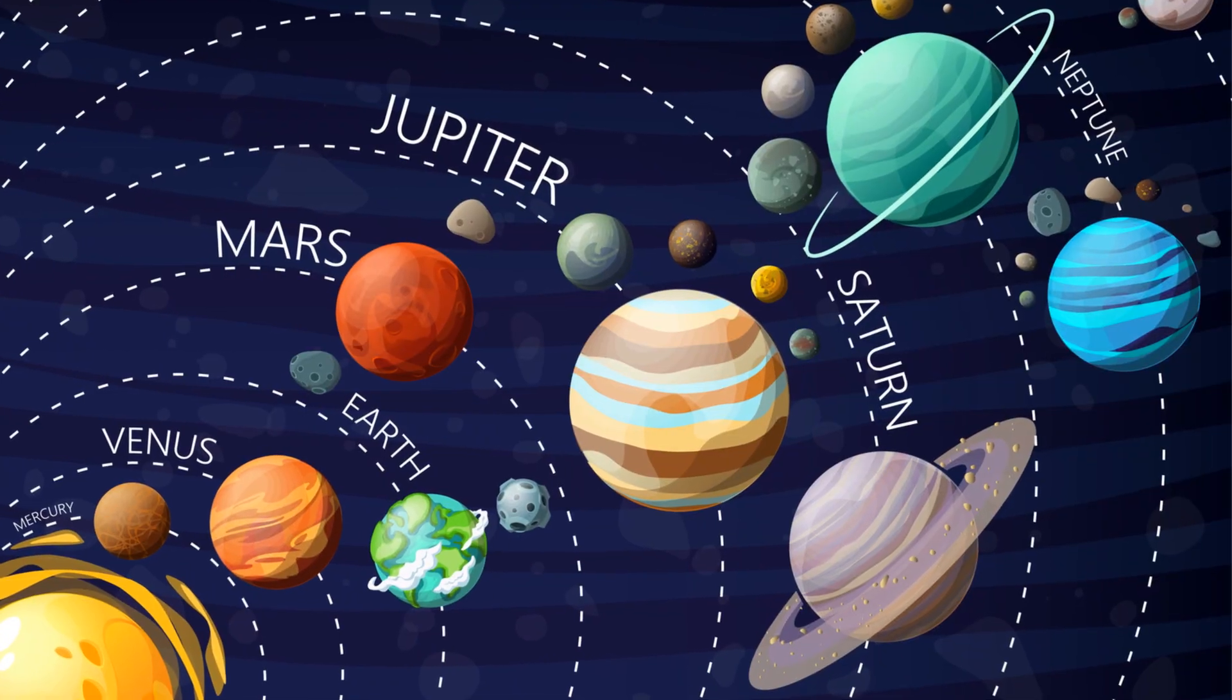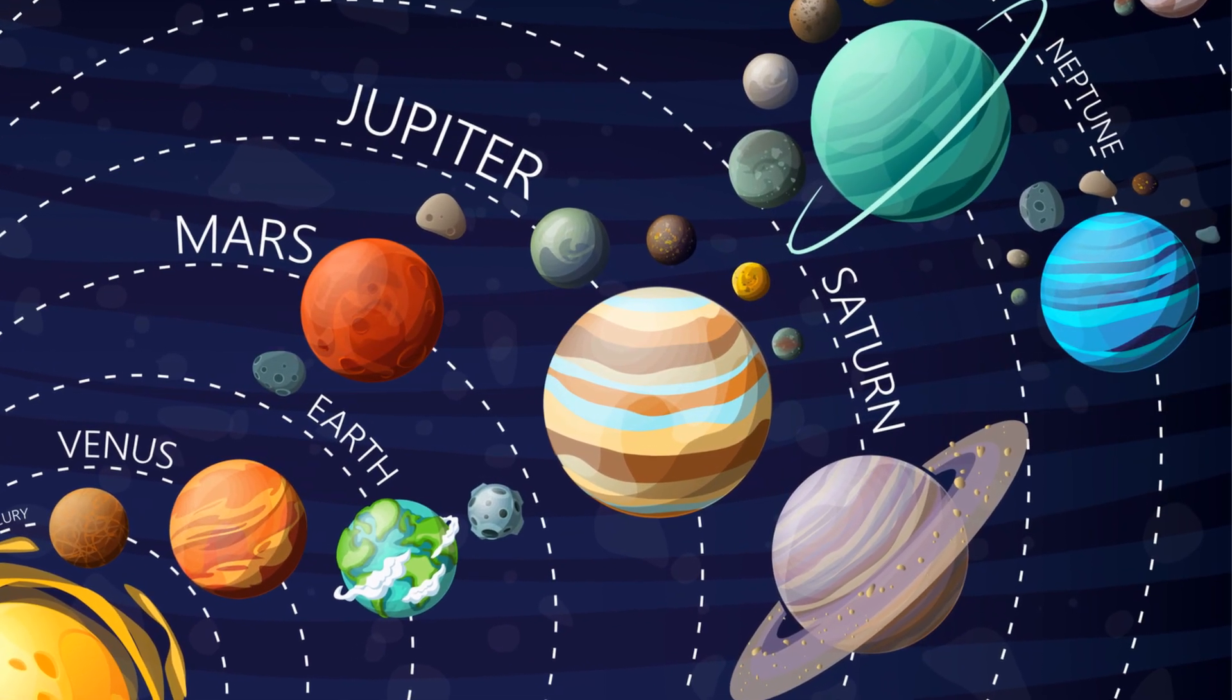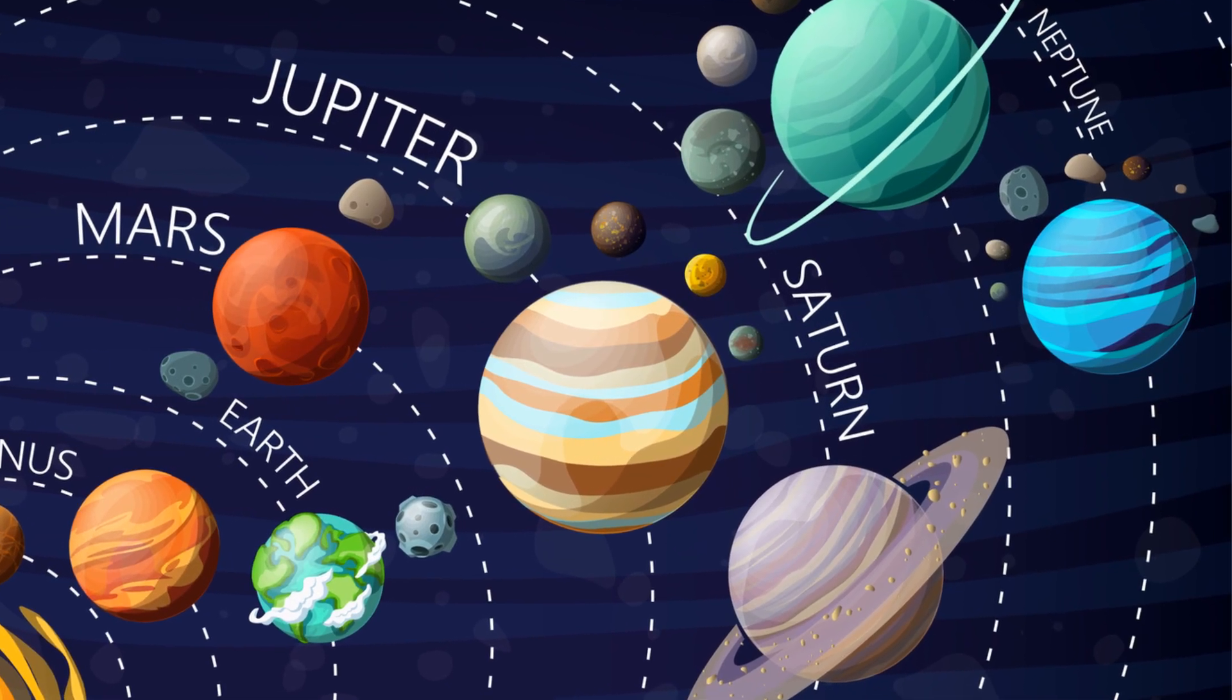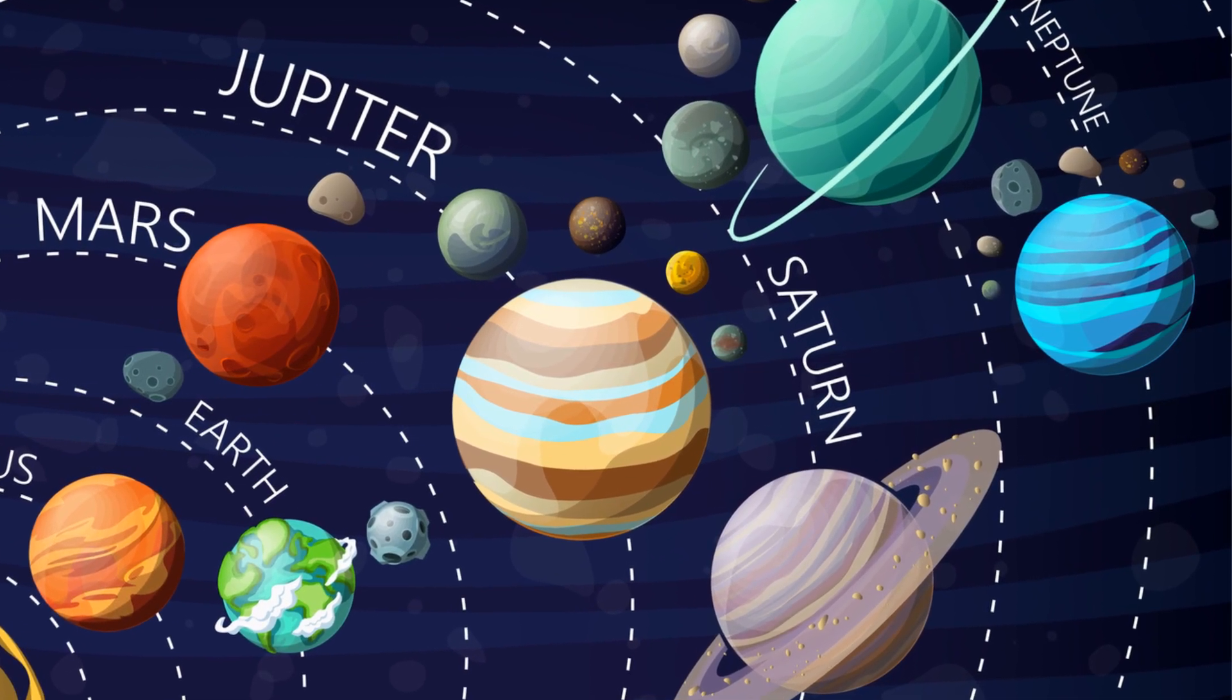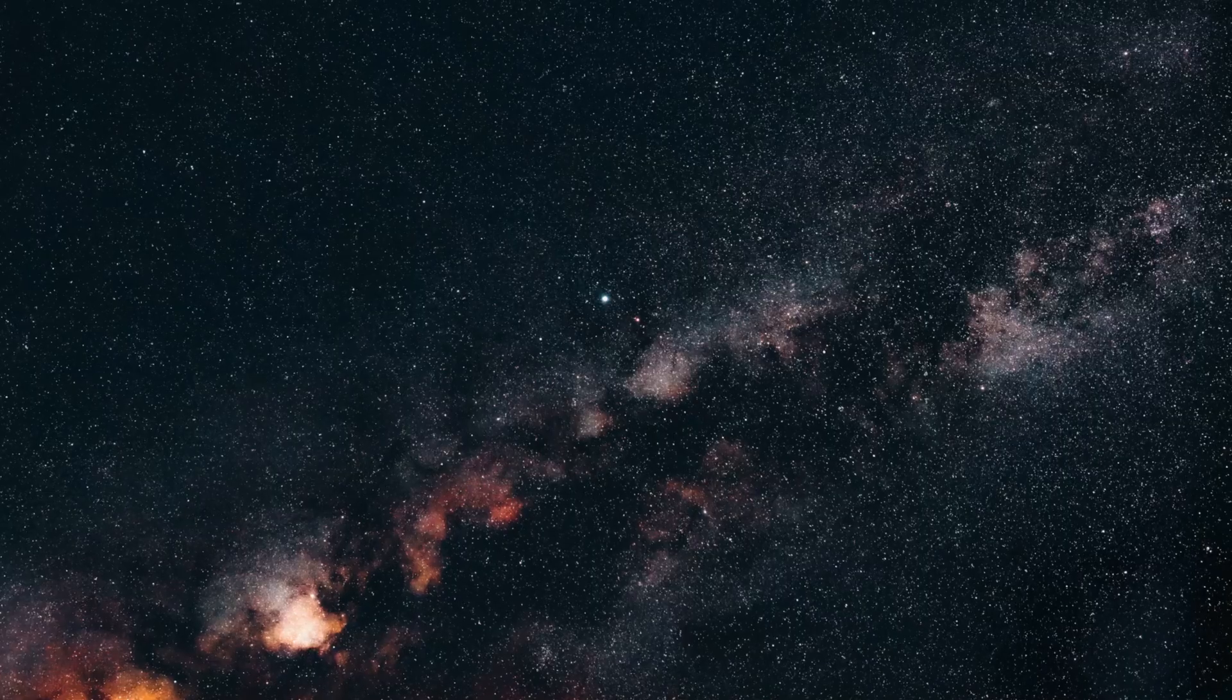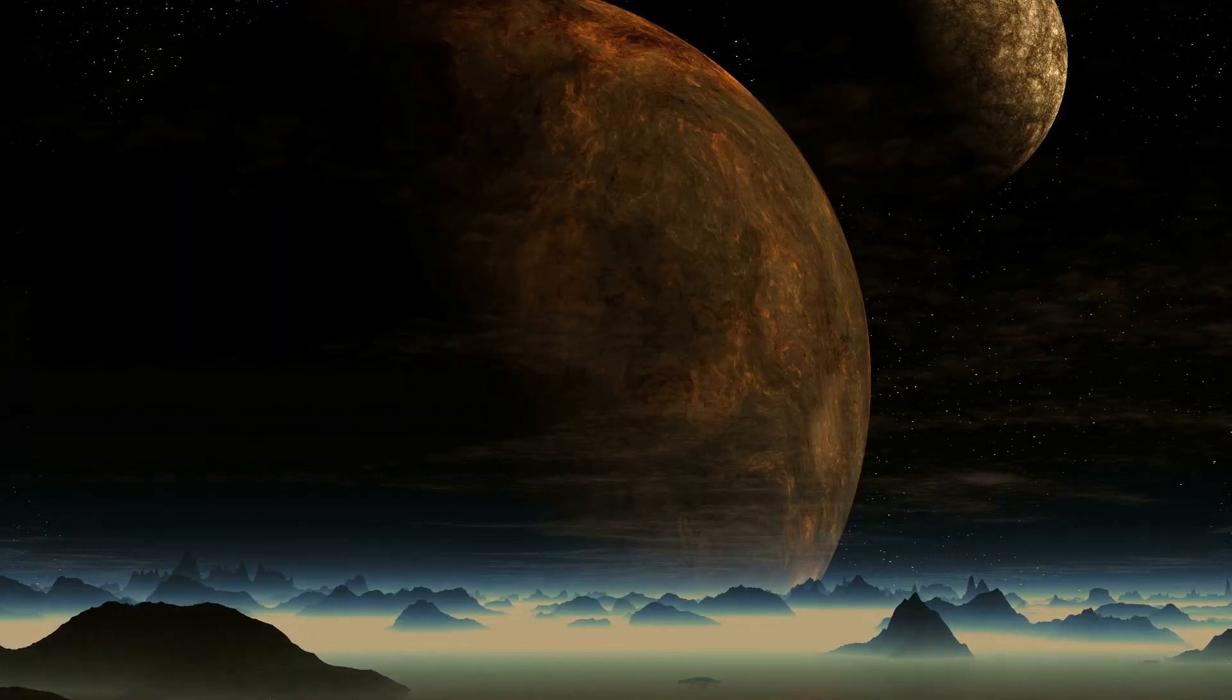So tonight, somewhere beyond Neptune, a tiny blue-gray world might be circling the Sun, quiet, cold, unseen, waiting for one telescope to catch its glint and prove we weren't imagining it. Maybe we never finished discovering home.